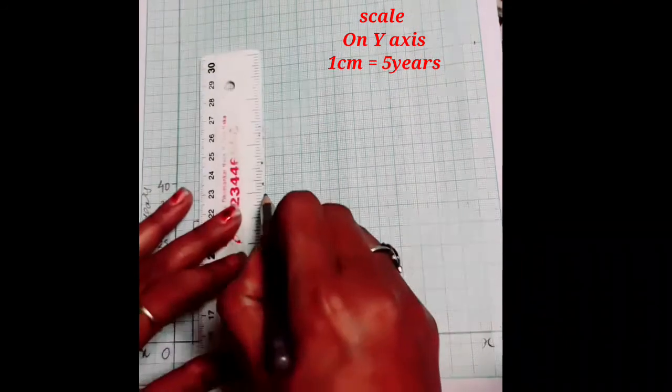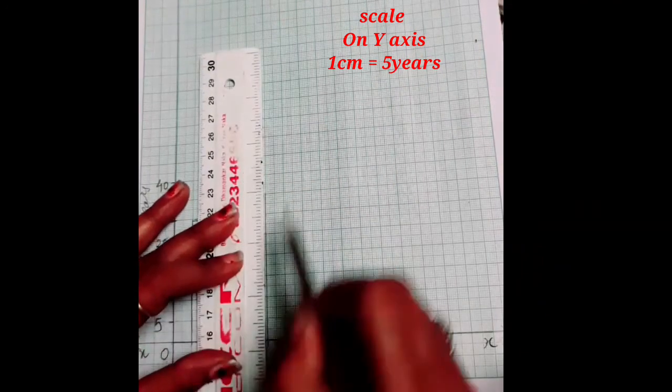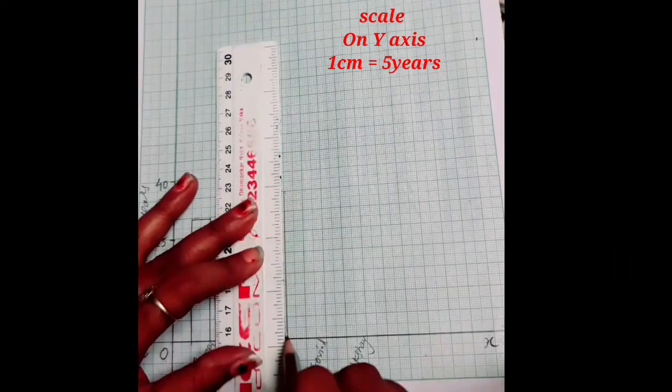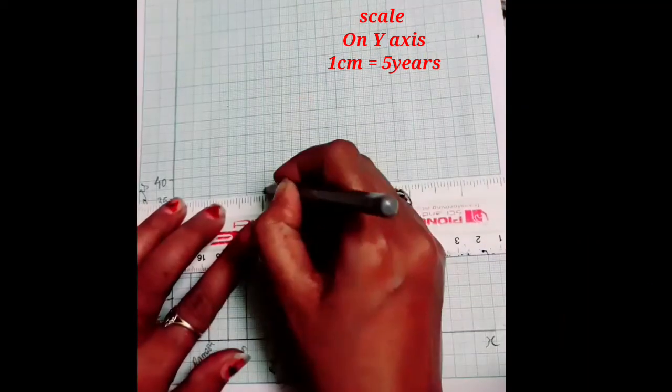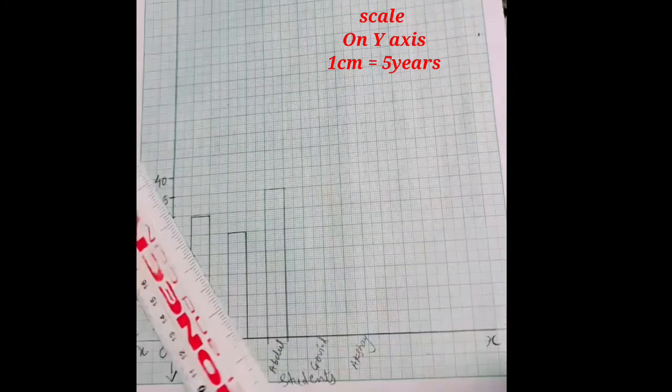And Abdul age is given 35 years. 35 years is given till here. You have to draw the simple bar graph.